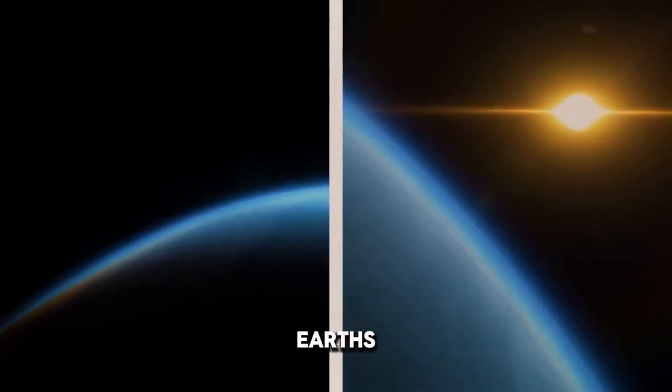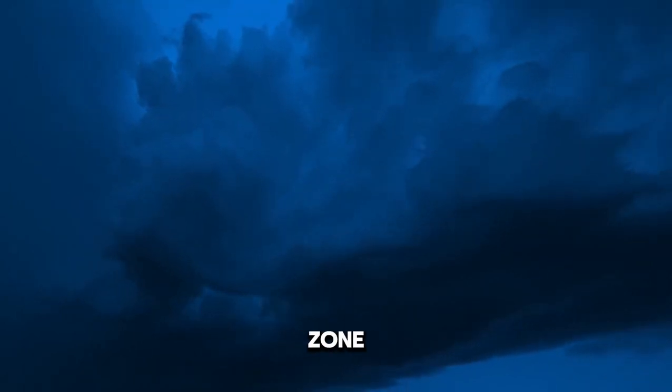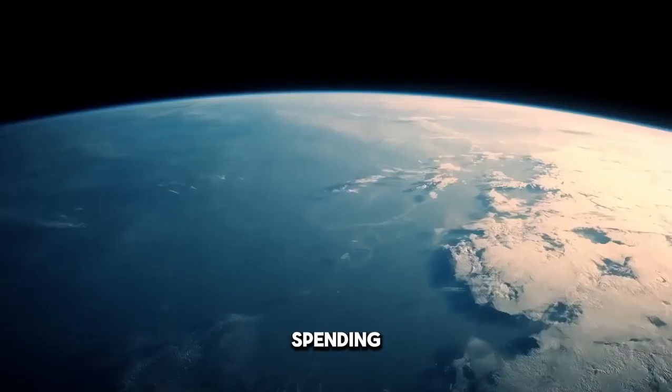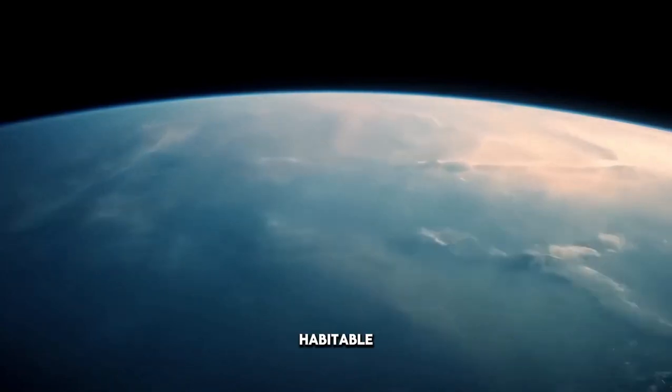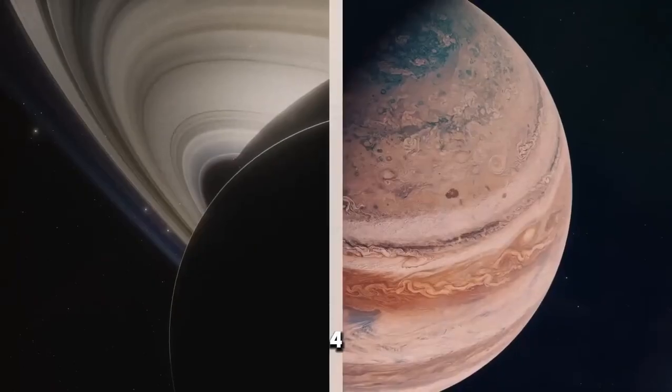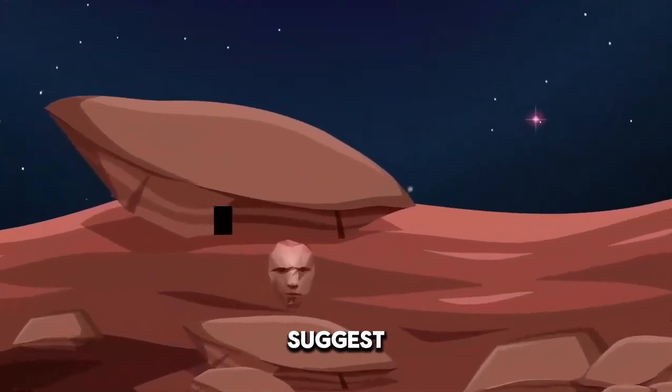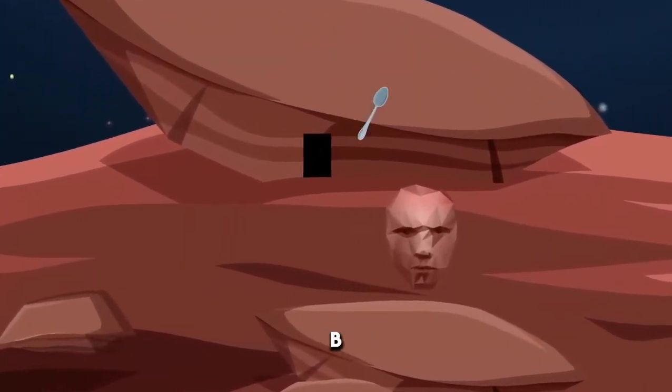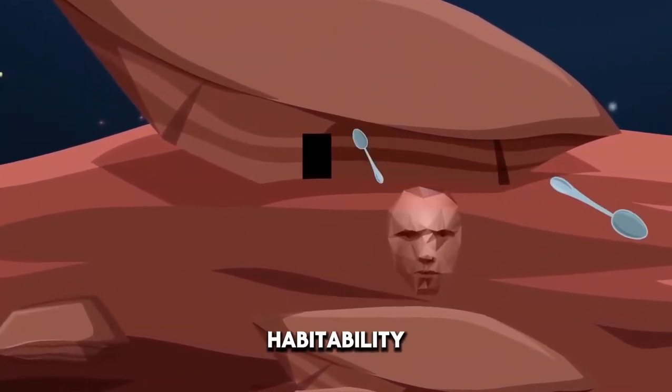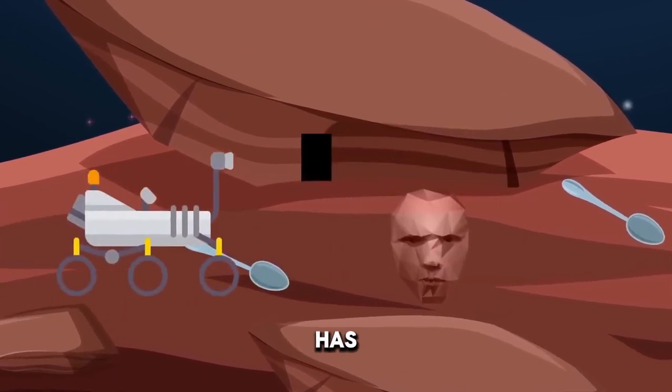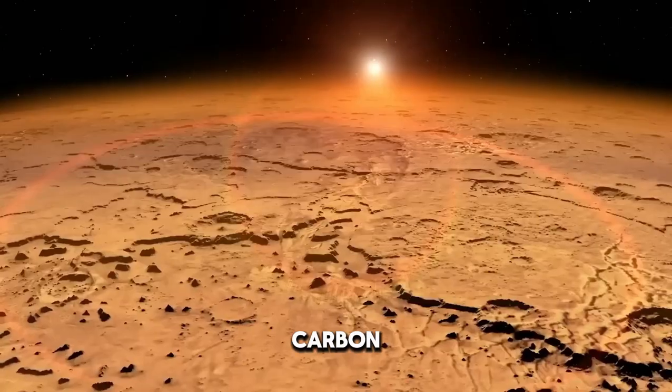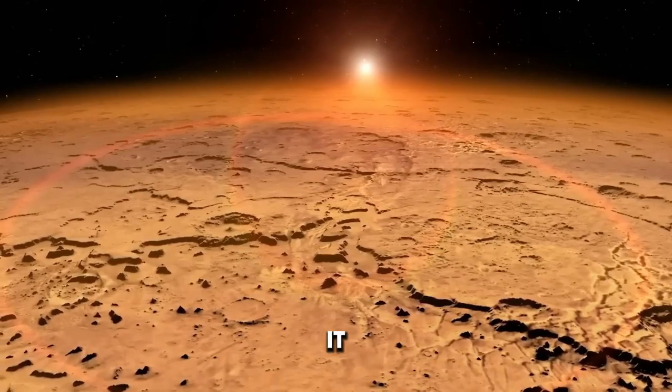Its orbit is similar to Earth's, and it resides in the habitable zone, albeit a bit farther. Spending 6 billion years in its star's habitable zone gives Kepler-452b an advantage in developing life. Recent findings suggest that if it has an atmosphere like Earth's, with carbon dioxide, it could be habitable.